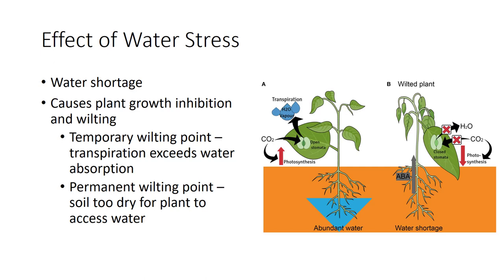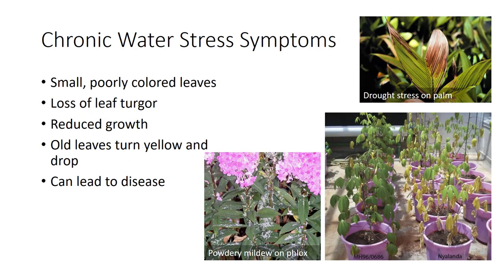With further drying, soil becomes too dry for the plant to access any water, and the permanent wilting point is reached. Now, the plant will not recover even if conditions improve. Note that the permanent wilting point is simply a function of soil, while the temporary wilting point occurs when one plant process exceeds another.